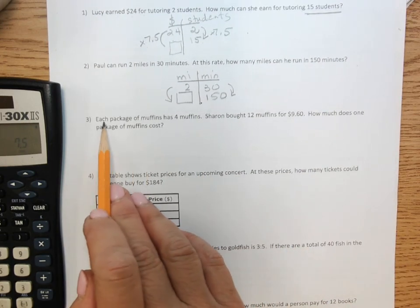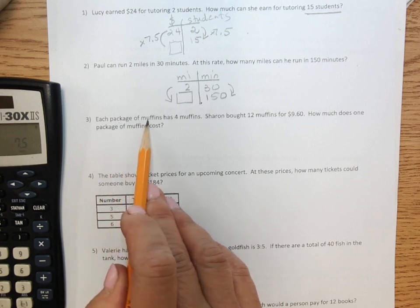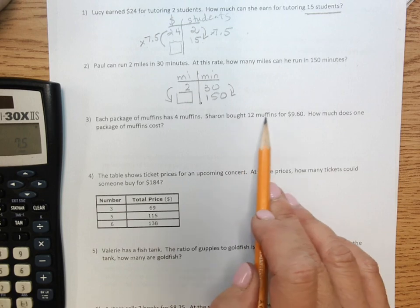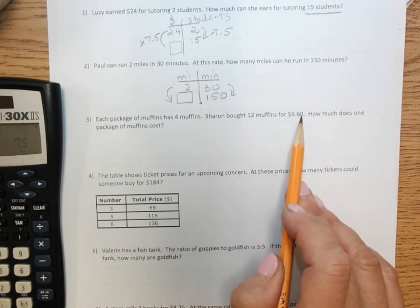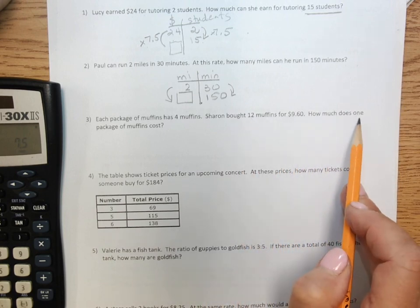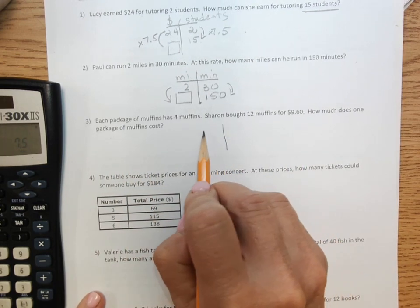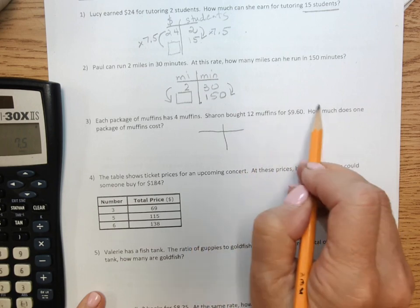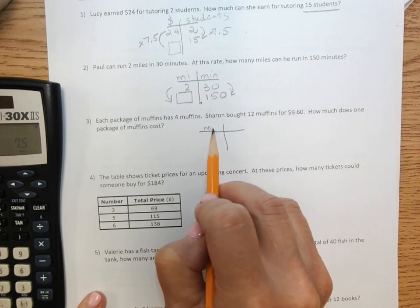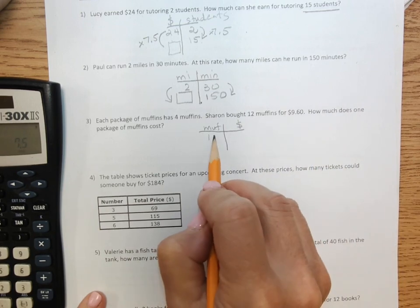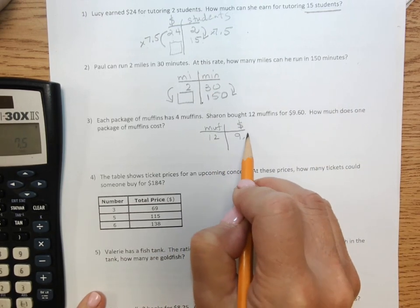Question number 3. Each package of muffins had 4 muffins in it. Sharon bought 12 muffins for $9.60. How much does one package of muffins cost? So the first thing I have to do is make my t-chart. And this is what I know. So I'm going to have muffins and dollars. 12 and $9.60.